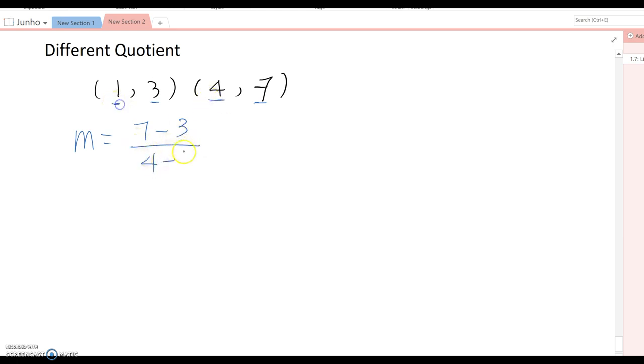So 7 minus 3 over 4 minus 1 becomes 4 over 3. That's how we found the slope so far, right? Now I want to use function notation and set up this point and find the slope again. Using function notation, those points can be rewritten as f(1) equals 3 and f(4) equals 7. It means we can rewrite this as (1, f(1)) and (4, f(4)).